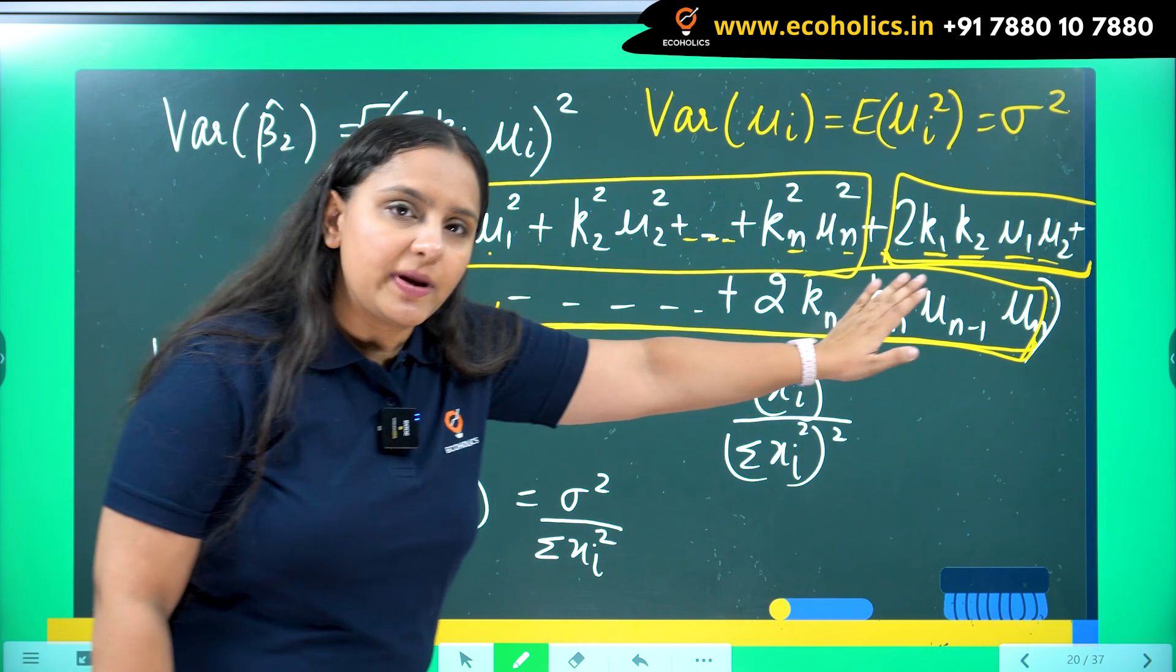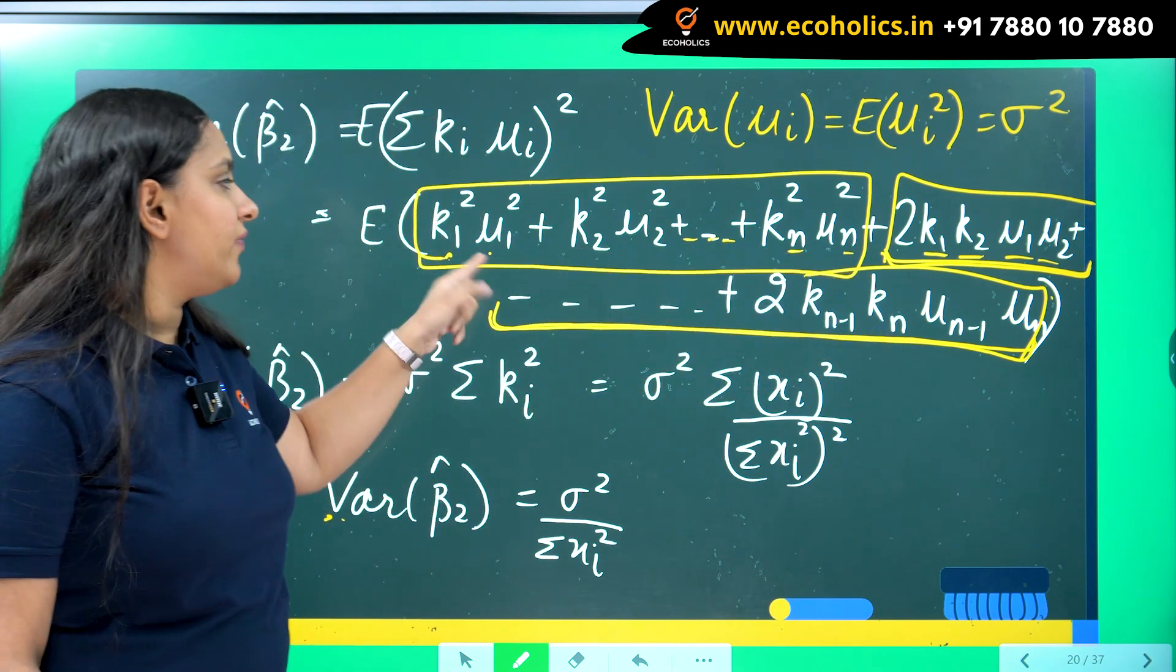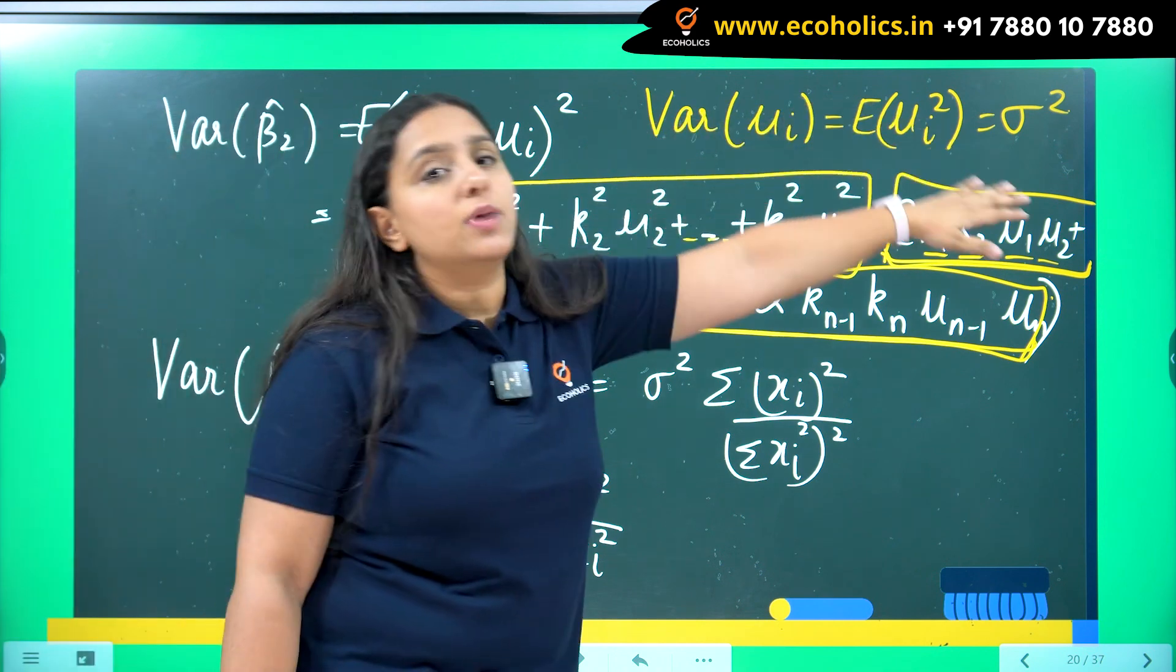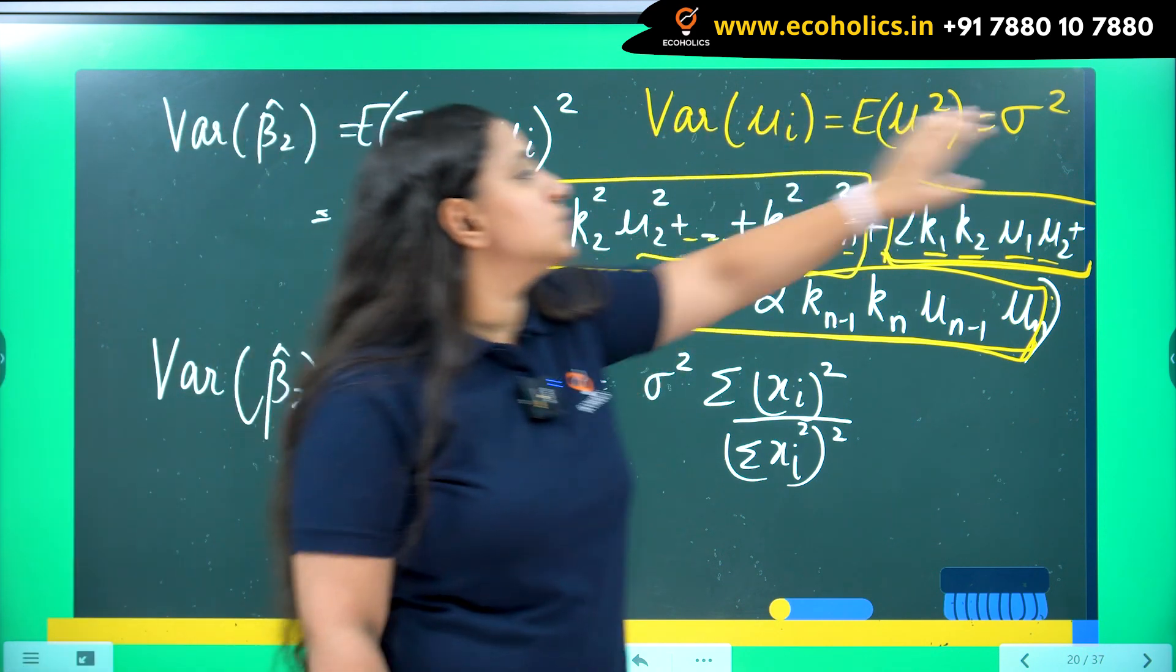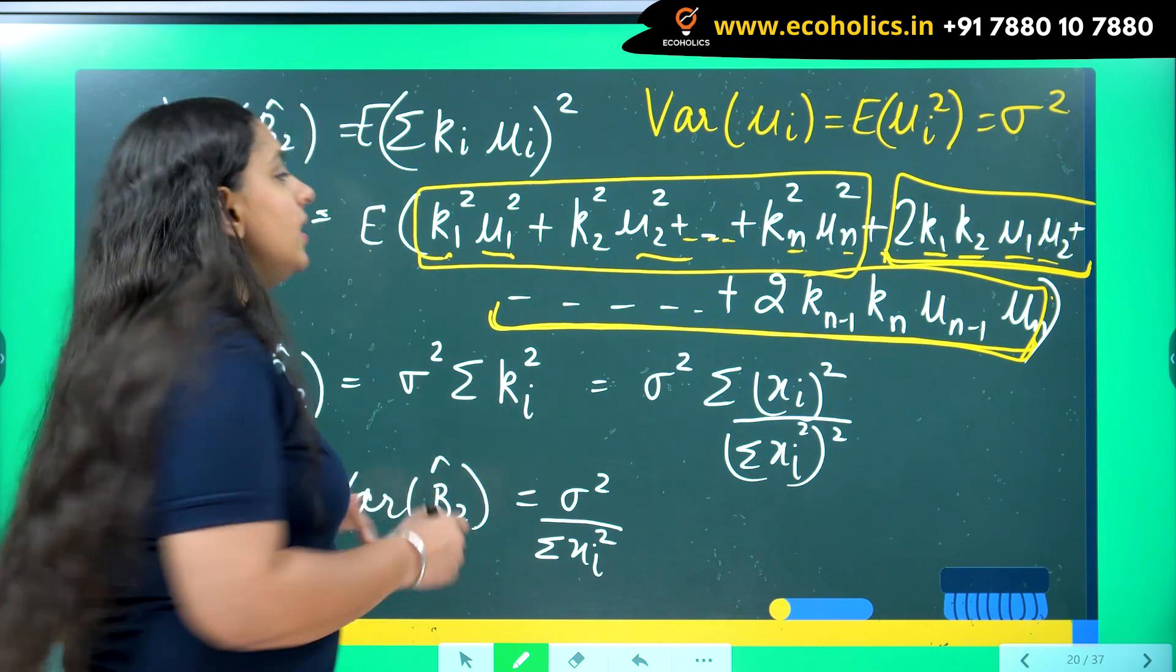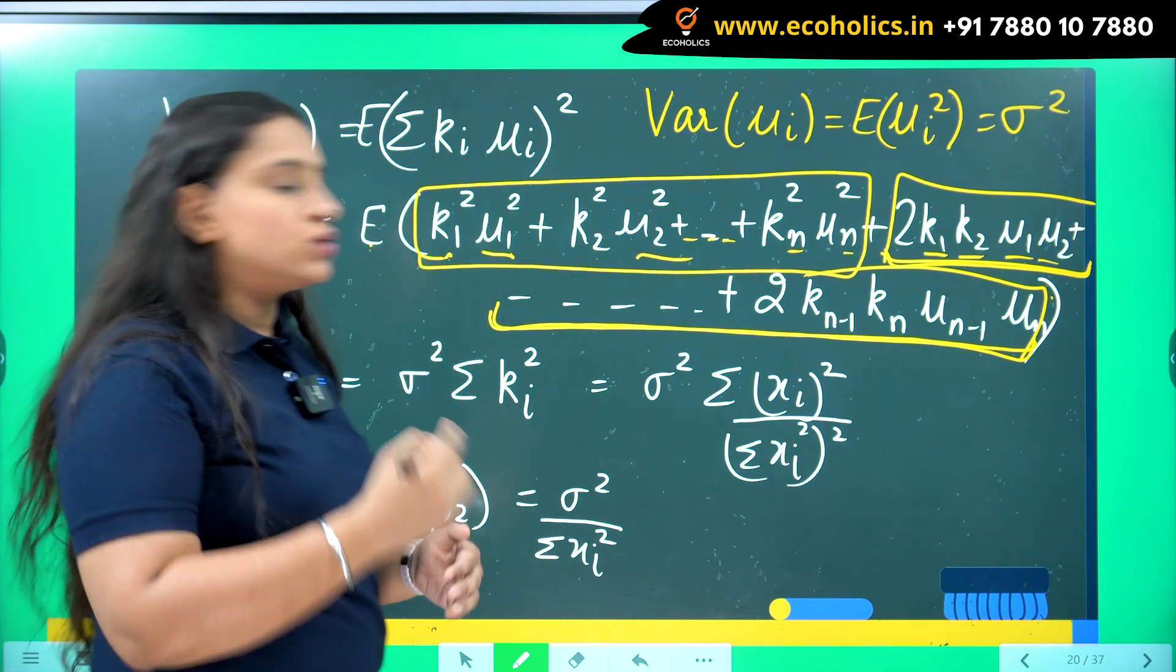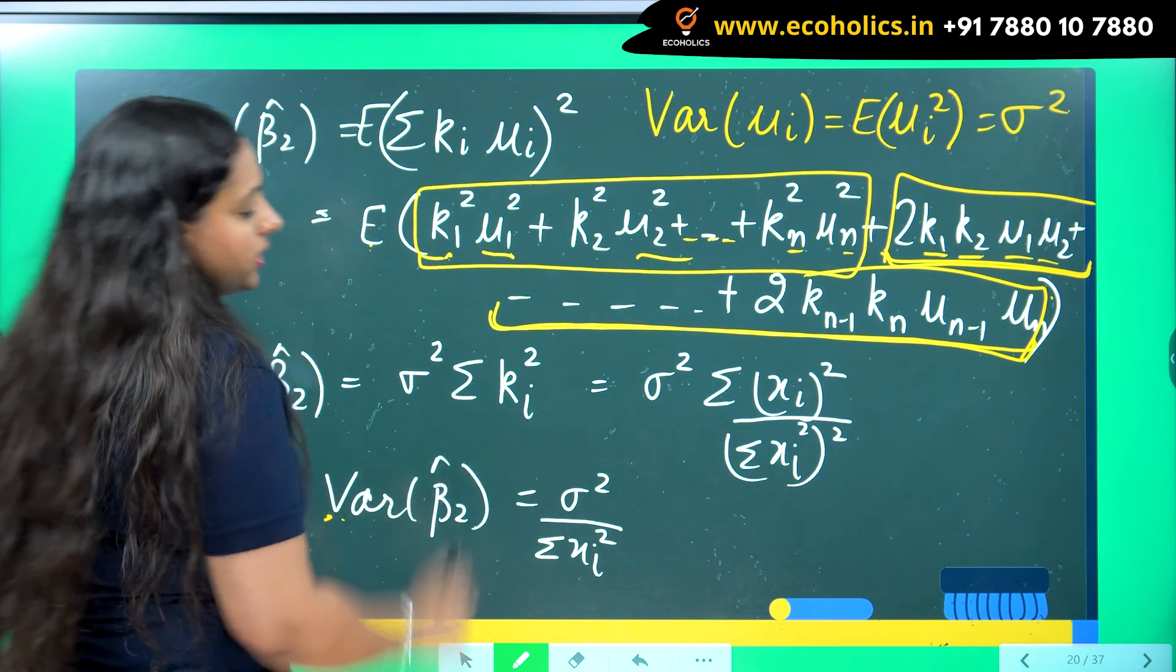So taking the expectation from here, I know if I take the expectation of mu 1 square I will get sigma square. Similarly mu 2 square is also sigma square. So number of sigma square. But when I take expectation of k 1 square, that is k i square, I am going to get summation k i square.